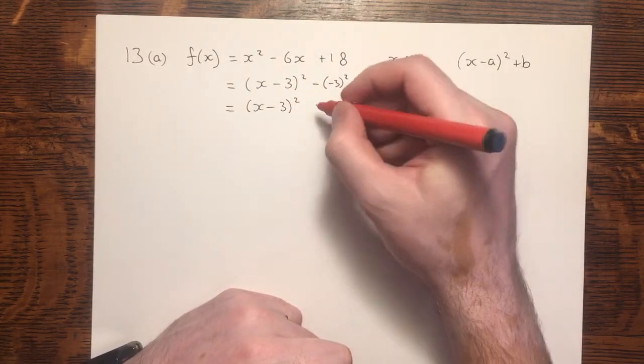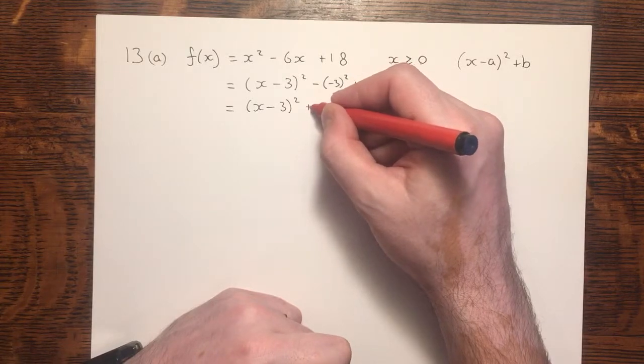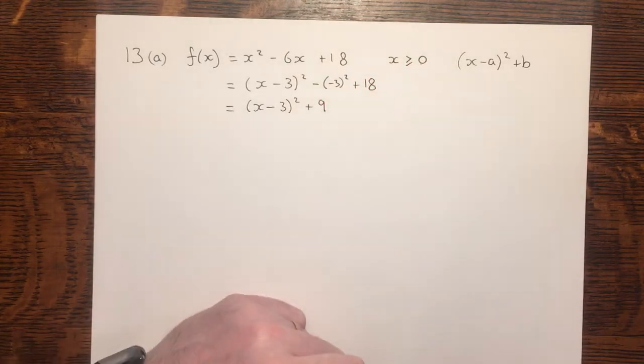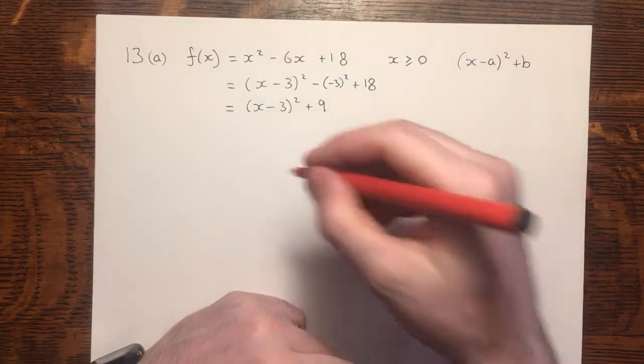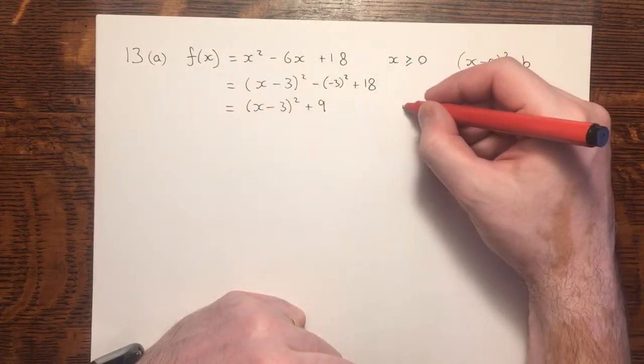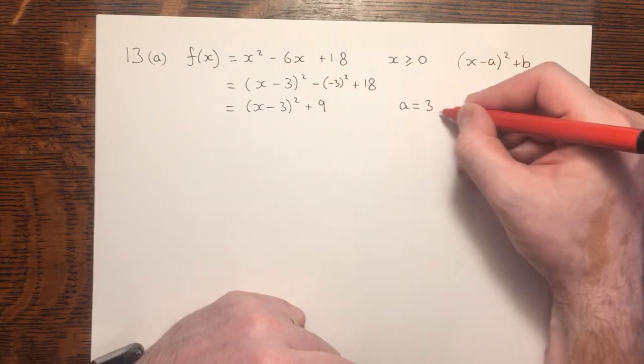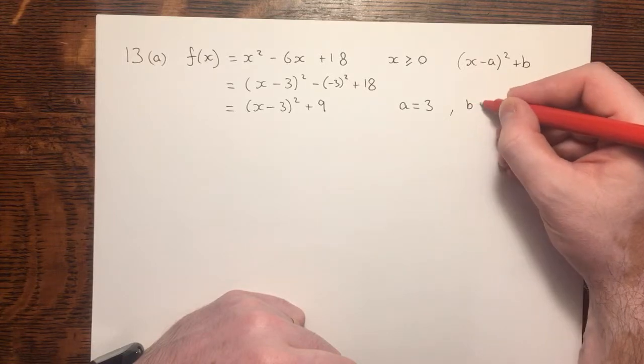and we then simply need to tidy up. This makes minus 9 with the 18, gives us a total of positive 9. And we've completed the square. We can state that a equals 3, and that b equals 9.